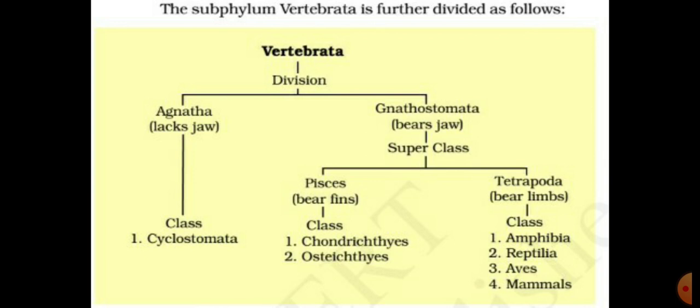The difference between non-chordate and chordate is that in non-chordates the notochord is absent, but in chordates the notochord is present. This means in non-chordates the vertebral column or backbone is absent, but in chordate animals the vertebral column or backbone is present. This specific character is the basis on which animals are classified into non-chordates and chordates.